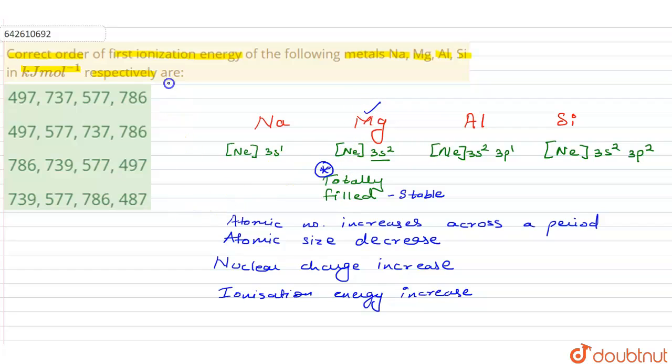So accordingly, let us see. As we can see over here, 786 is the highest energy, then comes 737, then comes 577, and the least is 497.